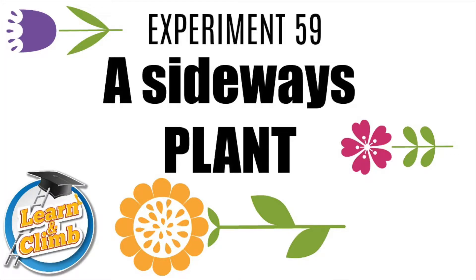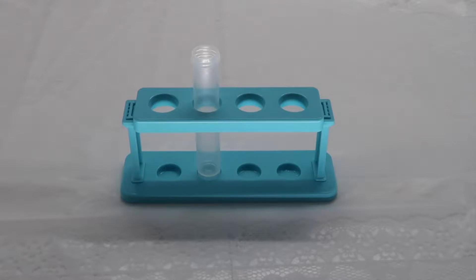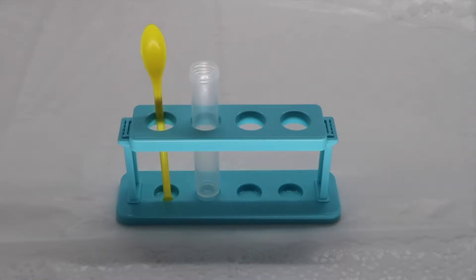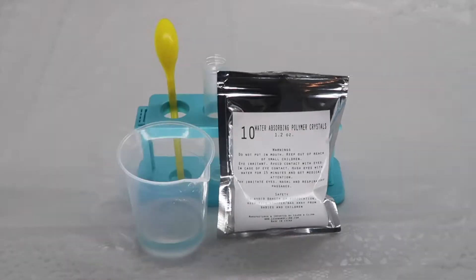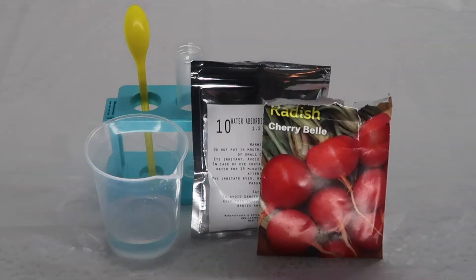Experiment 59: A Sideways Plant. Tools needed from kit: one test tube and test tube holder, one yellow measuring spoon, a beaker with water, packet number 10 which is your water absorbing polymer crystals. Ingredients needed from home: any kind of seed.